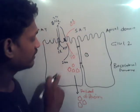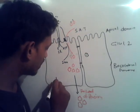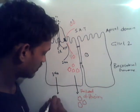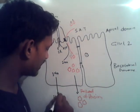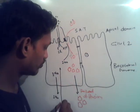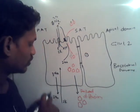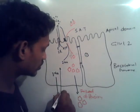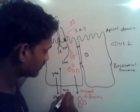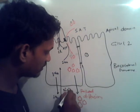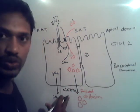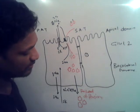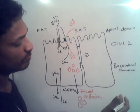Now the sodium concentration is greater inside. The cell again transports sodium outside by entering two potassium ions. This is known as primary active transport — the sodium-potassium ATPase. Transport comes from the apical to basolateral domain.